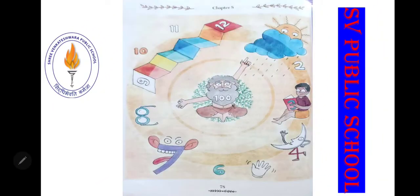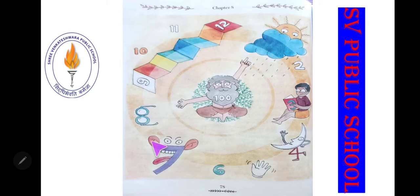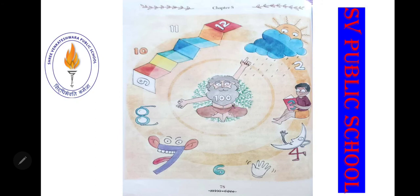In this picture, one o'clock पे एक sun है, cloud है और rain हो रही है। Two है, three o'clock में एक boy है जो पढ़ रहा है। Four o'clock में एक moon है, hand है जिसमें five fingers दिखा रहा है। Seven में two ears, two eyes, teeth और tongue है। Nine से twelve तक stairs हैं। And in the middle, Sage बैठा है — wise person जिन्हें सब कुछ पता है — और उनकी beard में 'Hundred' लिखा है।